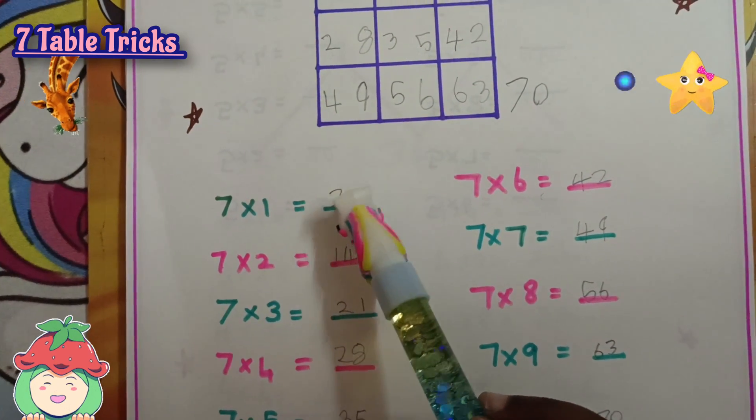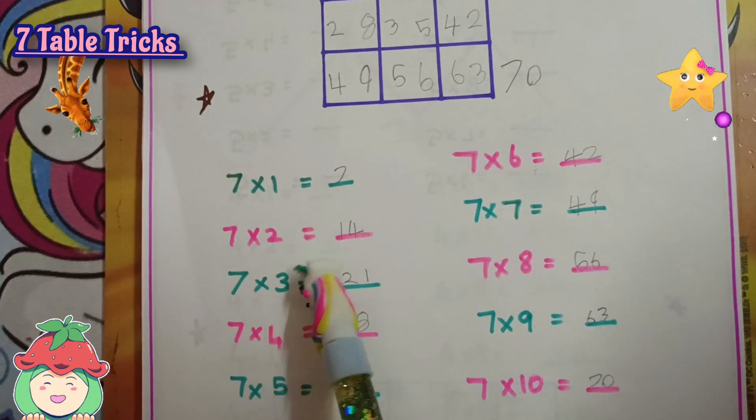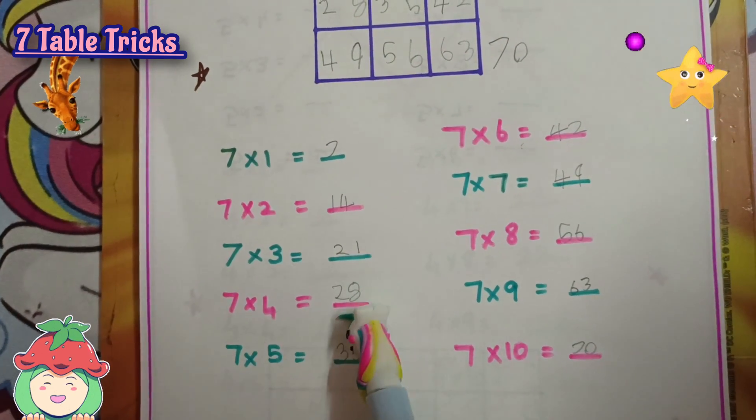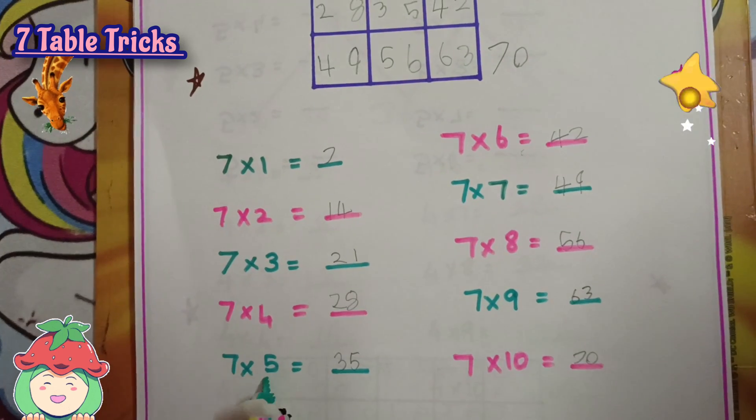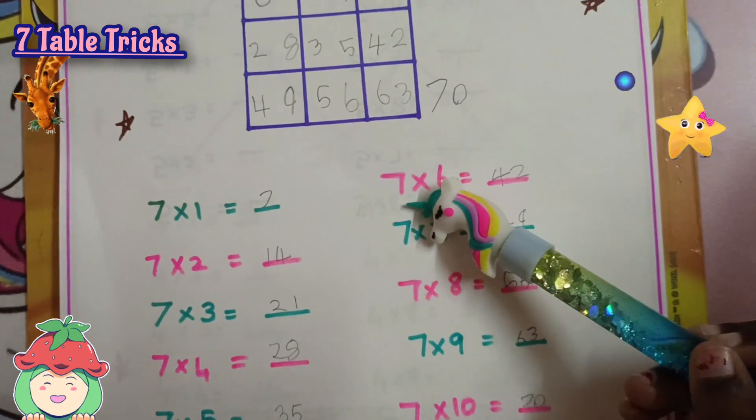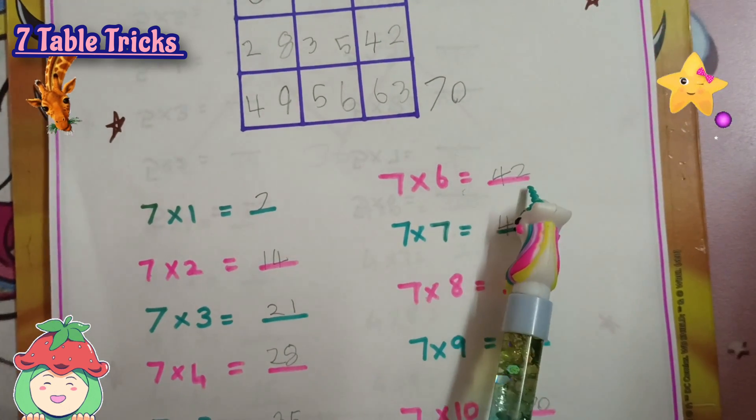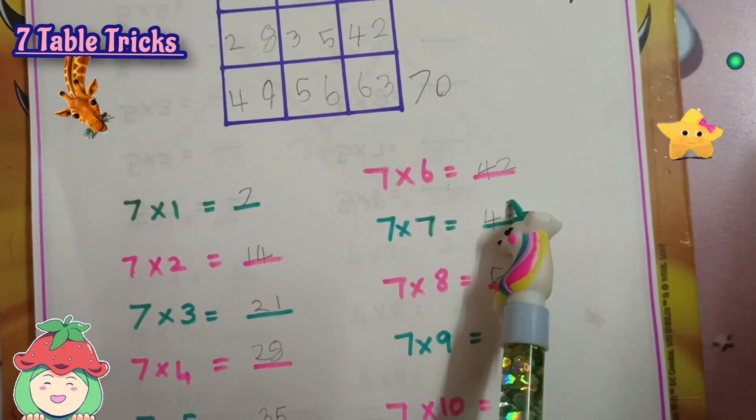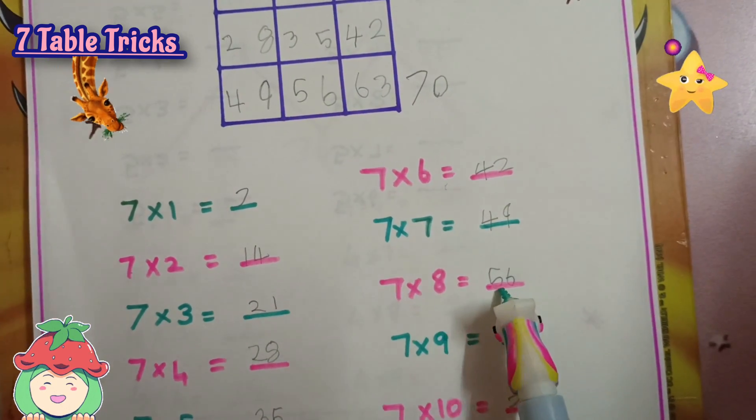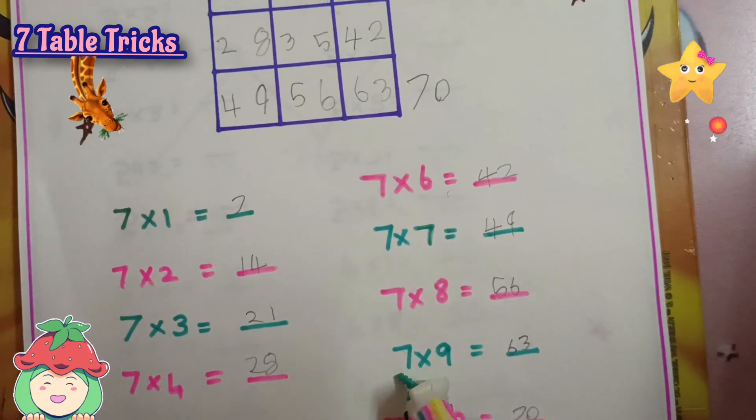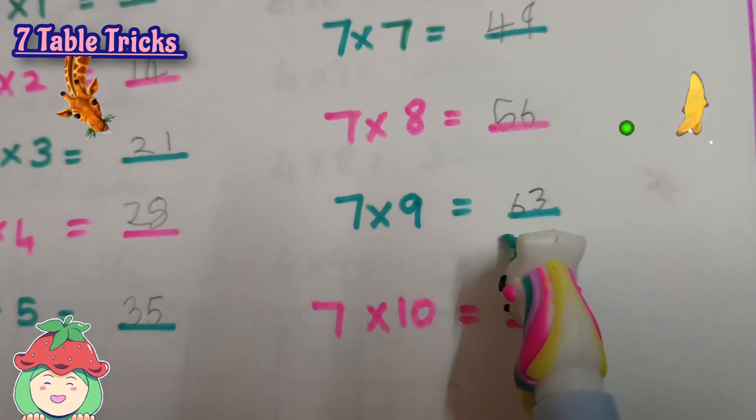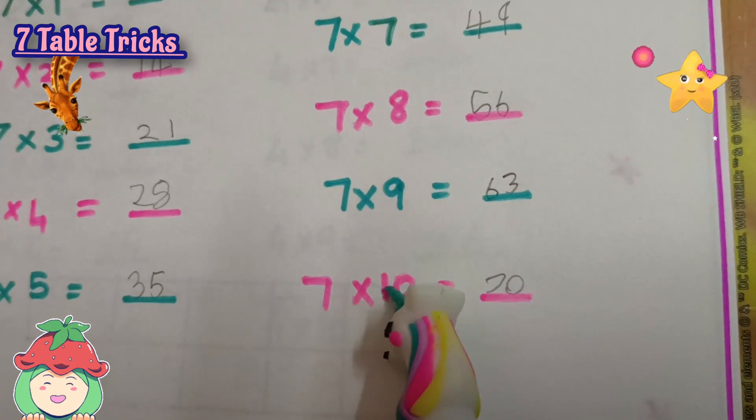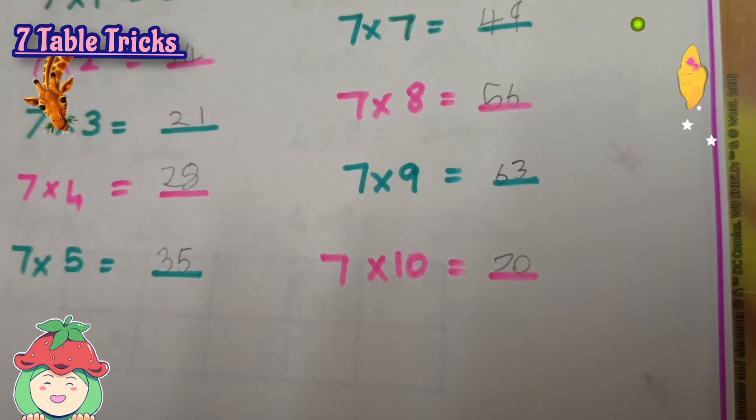Now let's recite: 7×1 is 7, 7×2 is 14, 7×3 is 21, 7×4 is 28, 7×5 is 35, 7×6 is 42, 7×7 is 49, 7×8 is 56, 7×9 is 63, 7×10 is 70.